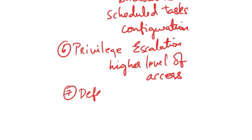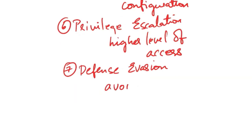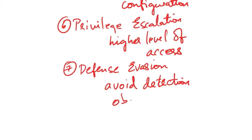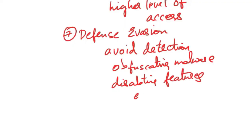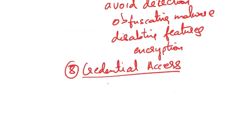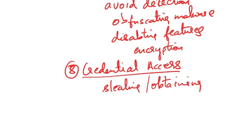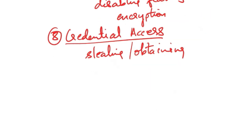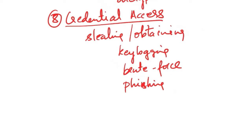Next is defense evasion — techniques that help adversaries avoid detection by security controls such as antivirus software, intrusion detection systems and SIEM (security information and event management) systems. This could involve obfuscating malware, disabling security features or using encryption to conceal malicious activity. Next is credential access — stealing or obtaining credentials through techniques like key logging, brute force attacks or phishing, as well as exploiting vulnerabilities to extract stored credentials.